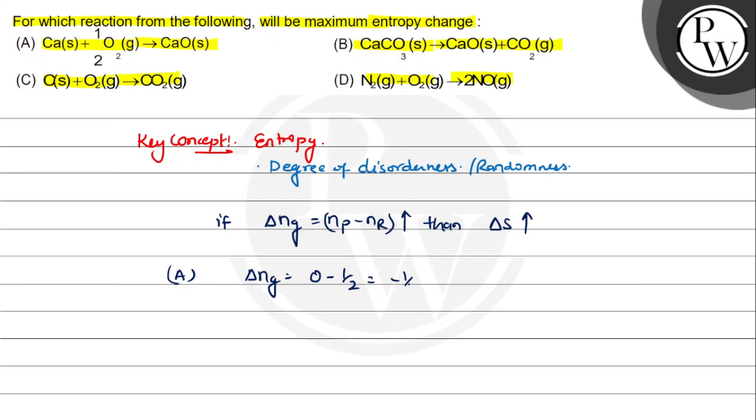For option B: CaCO3 solid to CaO solid plus CO2 gas. So ΔNg value here will be 1 minus 0, which is 1.